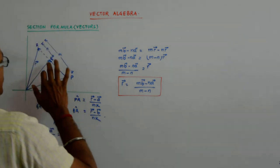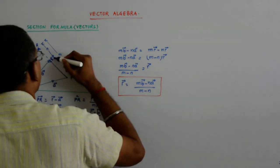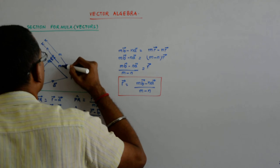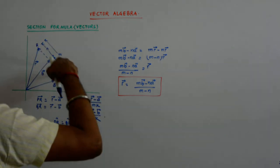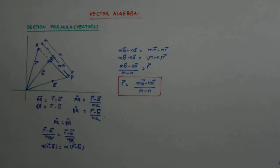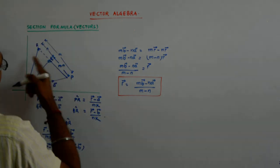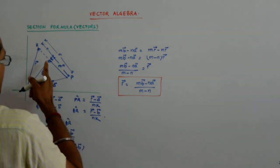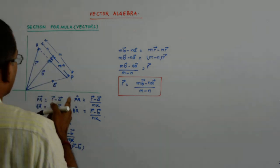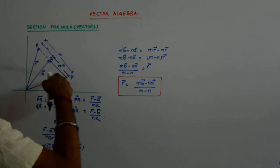We could have also utilized that Q divides PR internally in the ratio N is to M minus N. That would have given you the same result. If that was that, then I would have used the formula for internal division because Q is internally dividing PR in the ratio N is to M minus N.